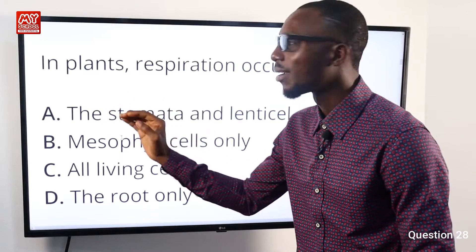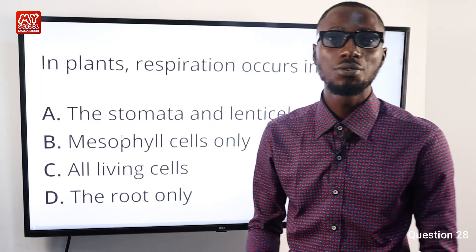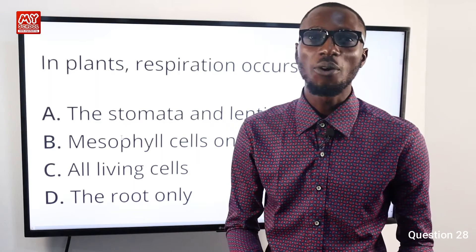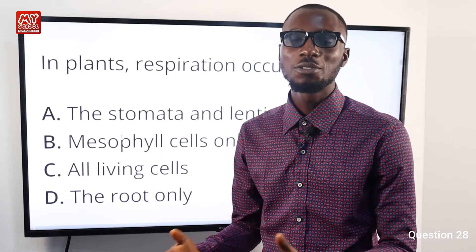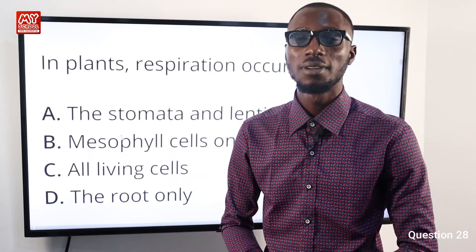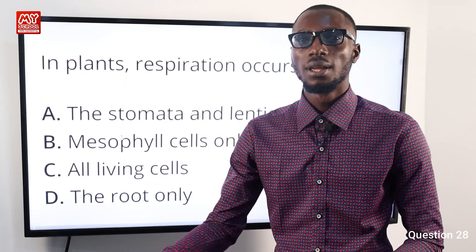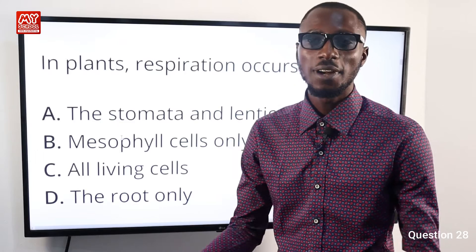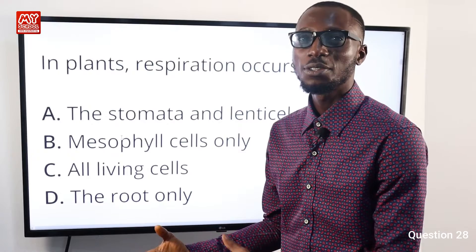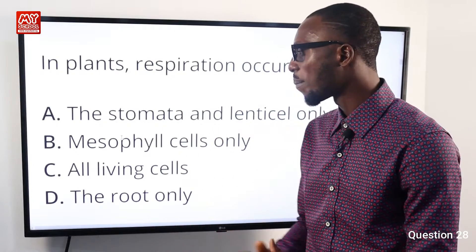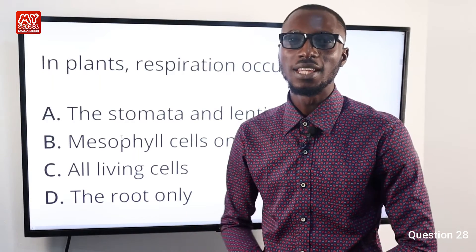Question 28: In plants, respiration occurs in all parts. It can occur through their flowers, leaves via stomata openings, lenticels found in branches, and through roots from air spaces found in the soil. We can say respiration occurs in all parts of the plant, or all living cells. So option C is very correct.